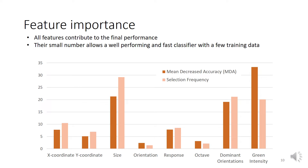We evaluated the set of eight training features according to their mean decreased accuracy, also known as permute importance, as well as the selection frequency. Both measures suggest that size, color, and number of dominant orientations are most important. Response and coordinates have medium importance, while octave and orientation angle are less important. However, all features contribute to the final performance without decreasing the accuracy. The small number of features also allows a well-performing and fast classifier, which does not require a huge amount of data.